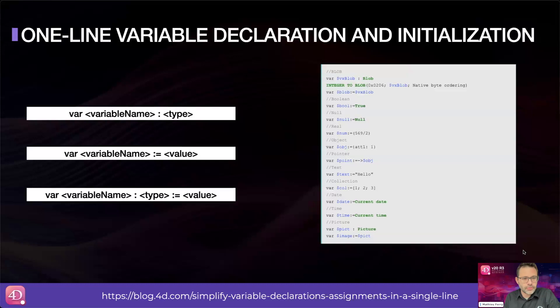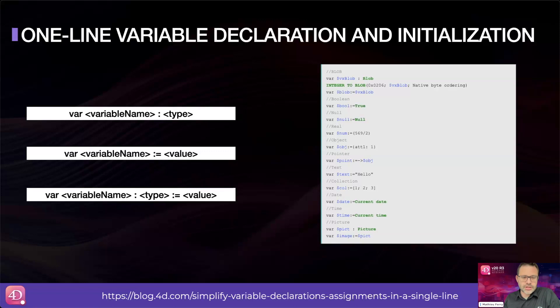This allows you to write more concise and readable code. Previously you could already declare a variable and specify its type, but now you can directly provide an initialization value with or without indicating the type of the declared variable. If you initialize a variable without specifying its type, 4D will determine the variable's type based on the initialization value. It's recommended to use this approach exclusively with scalar types derived from values, commands, or methods, to avoid surprises.